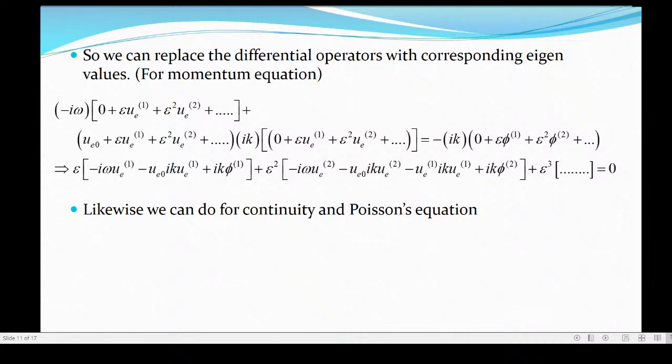If we replace the differential operators with corresponding eigenvalues - for the momentum equation we are replacing d/dt with minus i omega and d/dx by plus i k. We get a series of expressions corresponding with different powers of epsilon. You see here is epsilon 1, here is also epsilon 1 corresponding. Why did I put it 0 here? Because it was a constant velocity - when I take derivative of a constant that becomes 0.